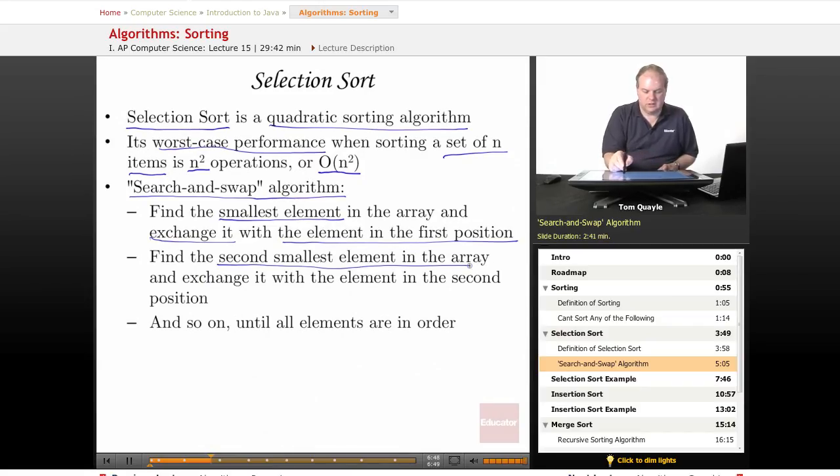So find the second smallest element in the array, which would be the smallest element that we haven't already moved to the front of the array. And we exchange it with the element in the second position. So then positions one and two would have the smallest and second smallest elements respectively. And whatever was in position two in the second position now ends up in whatever position the second smallest element was originally in.